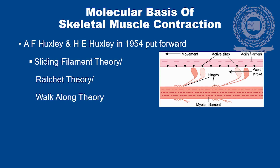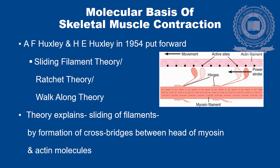In 1954, two scientists A. F. Huxley and H. E. Huxley put forward the molecular basis of skeletal muscle contraction by sliding filament theory or mechanism, which is also known as ratchet theory or walk-along theory. This theory explains the sliding of filaments by formation of cross bridges between the head of myosin and actin molecules.